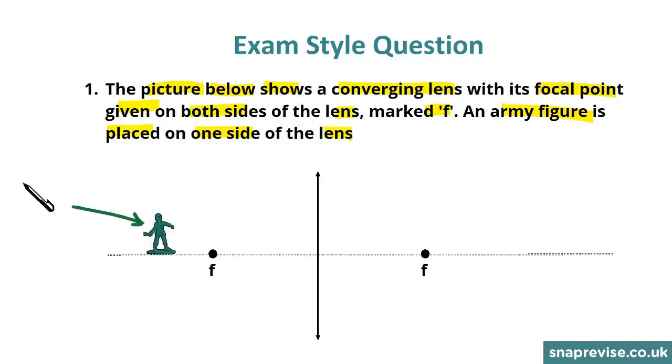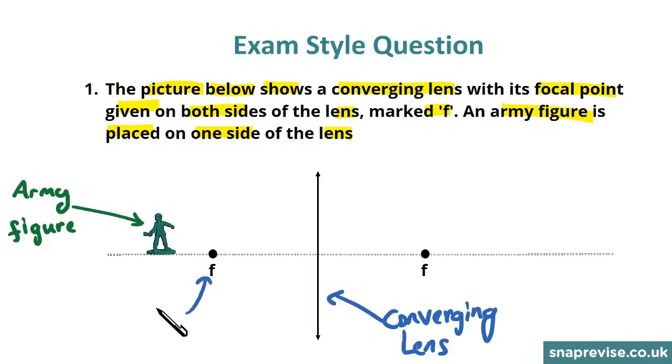So here is our object which is an army figure. Here is our lens which is a converging lens. And we see here we have some focal points marked as well.